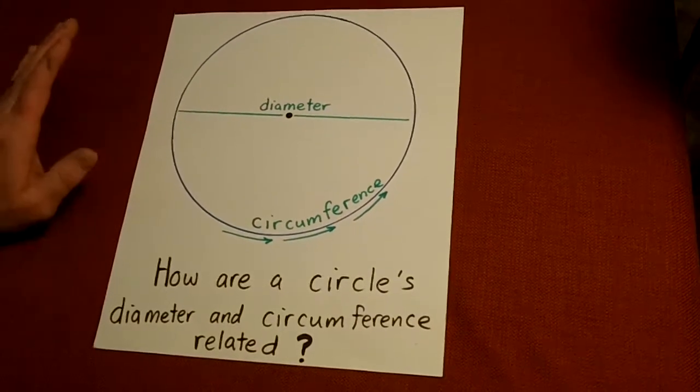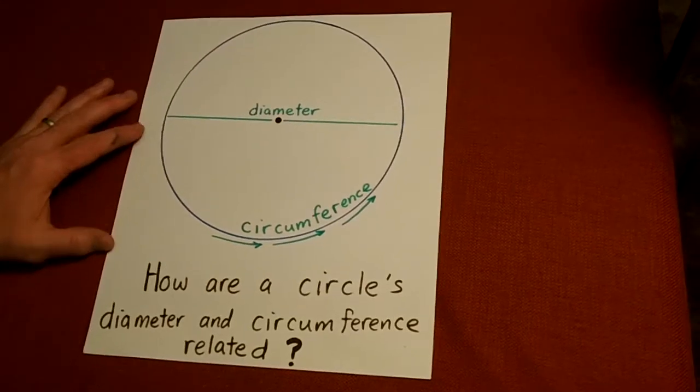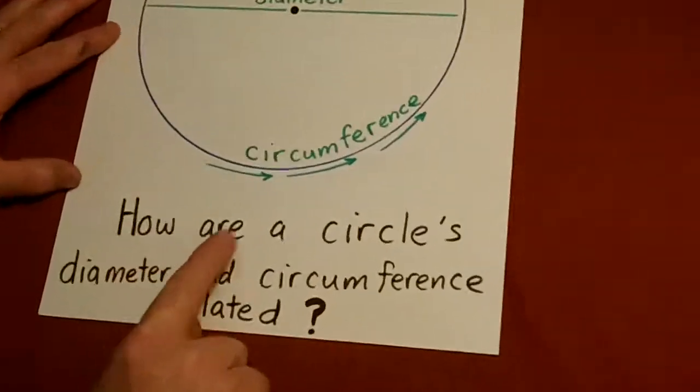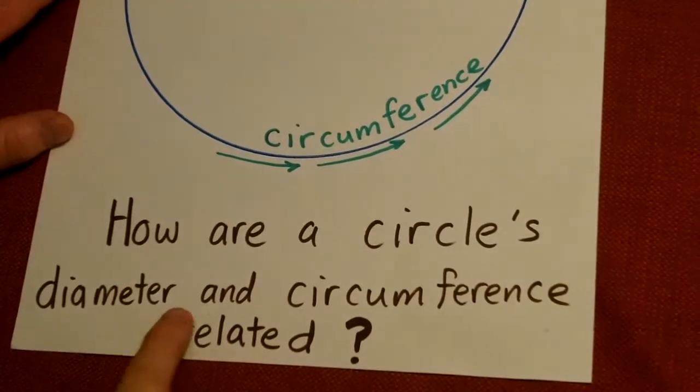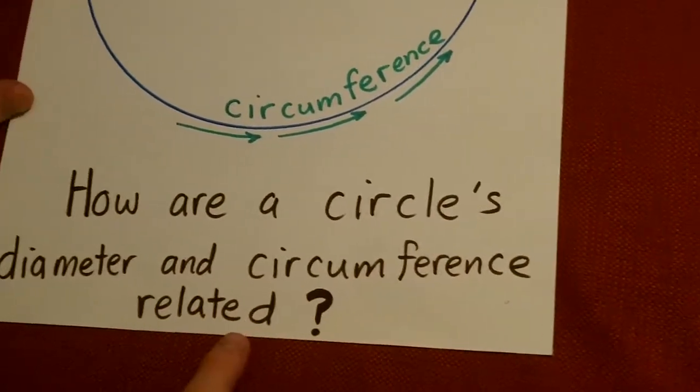Hello. In this segment, we want to answer the question right down here below the circle. How are a circle's diameter and circumference related?